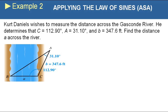Here's another word problem. Kurt Daniels wishes to measure the distance across the river. He determines that C is 112.9 degrees, A is 31.1 degrees, and B is 347.6 feet. Find the distance A across the river. Here we don't really have to solve the whole triangle, we just are supposed to find side A. And they've drawn the triangle for us. Let's see what we have. You see how this is angle, side, angle, angle, side, angle. So this is case one, meaning we can use the law of sines to set it up.